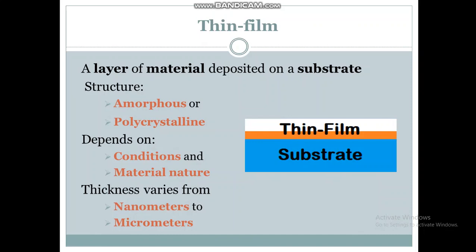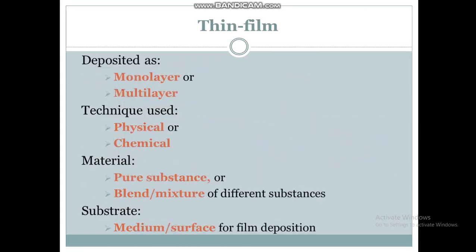Thin film is a layer of material deposited on a substrate. For example, silvering of a mirror, in which silver is deposited on glass, is an example of thin film deposition on a substrate. The structure of thin film may be amorphous or polycrystalline depending on conditions and type of material. The thickness of thin film varies from nanometers to micrometers, depending on the type of deposition technique used. Thin film may be deposited as a monolayer or multiple layers.